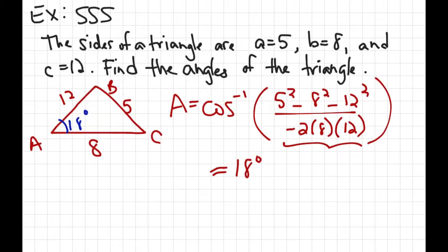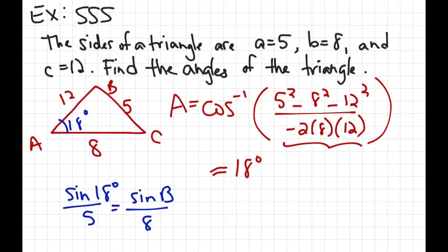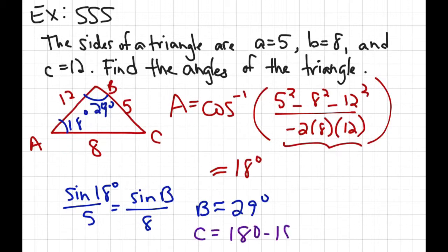Now that we know angle A is 18 degrees, we can use the law of sines to find angle B: sine of 18 degrees over 5 equals sine of angle B over 8. Cross multiply and take the inverse sine, and angle B is approximately 29 degrees. Once you find angle B, angle C is just 180 minus 18 minus 29, which equals 133 degrees.